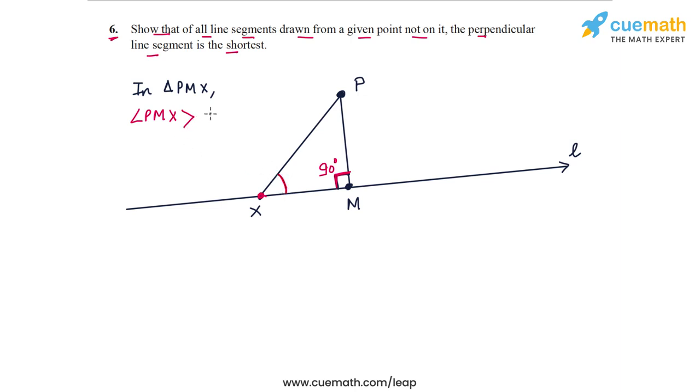Angle PMx must be greater than angle Pxm for sure, because angle PMx is 90 degrees, so this must be the largest angle in the triangle. And this means that the side opposite angle PMx, which is Px, must be greater than the side opposite angle Pxm, which is PM. So Px must be greater than PM.